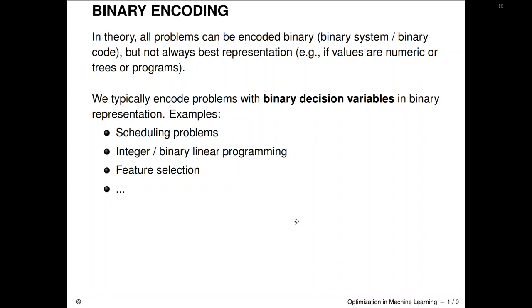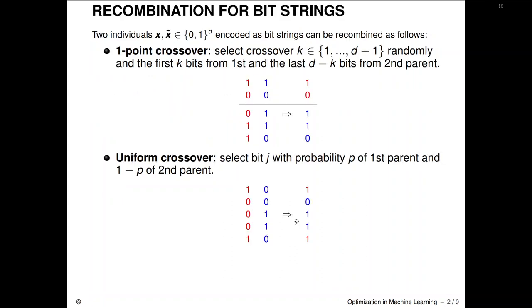Or maybe more in the scope of our lecture here, you could encode a feature selection problem in machine learning as a binary decision problem. So for each feature, you can have a decision variable whether to have the feature in the model or not, and then again run a genetic algorithm on that. And that we will look at as an example here at the end of this section. So before we do this, let's go through the motions and discuss the recombination, so the crossover and the mutation operators.